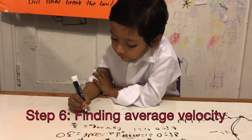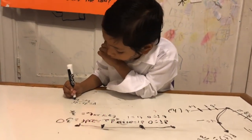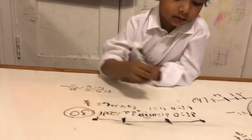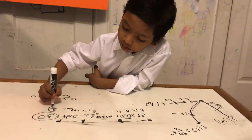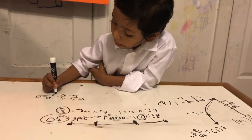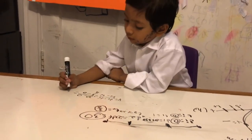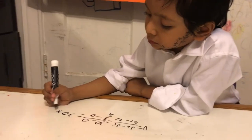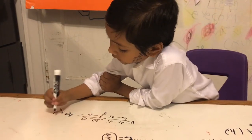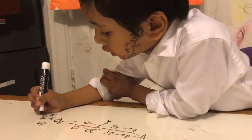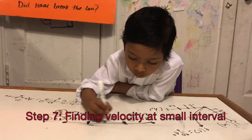Velocity is equal to d final minus d initial over t final minus t initial. 30 minus 0 over 3 over 2 is equal to 30 times 2 over 3 because we flip it. So 10 times 2 equals 20. Velocity equals 20.